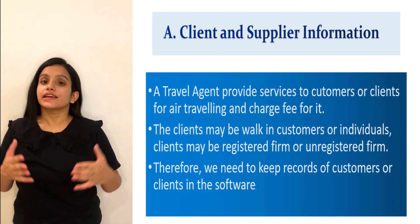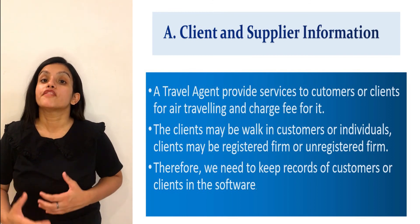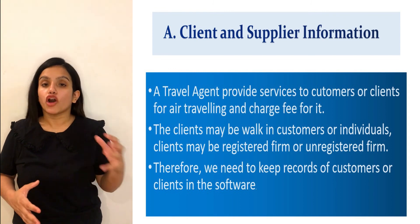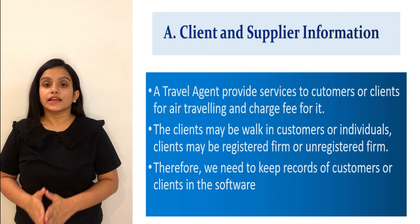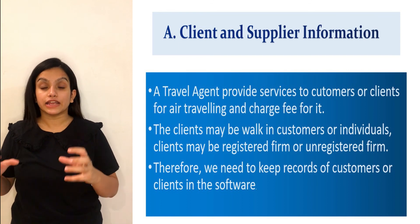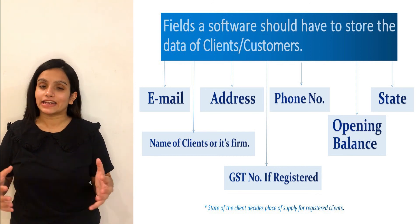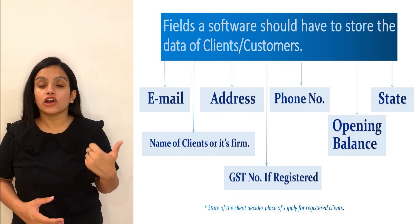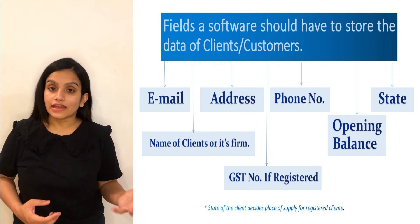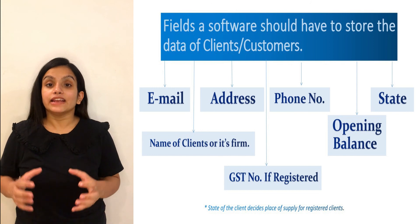A — Client and Supplier Information. A travel agent provides services to the client in the form of air ticketing and charges a fee in return. A client can be a walk-in customer, an individual, or an unregistered or registered firm. Therefore, there should be an option to record the client's data in the software. The software should have the following parameters: name of the client or firm, address, email ID, phone number, state, GST number if registered, and opening balance.